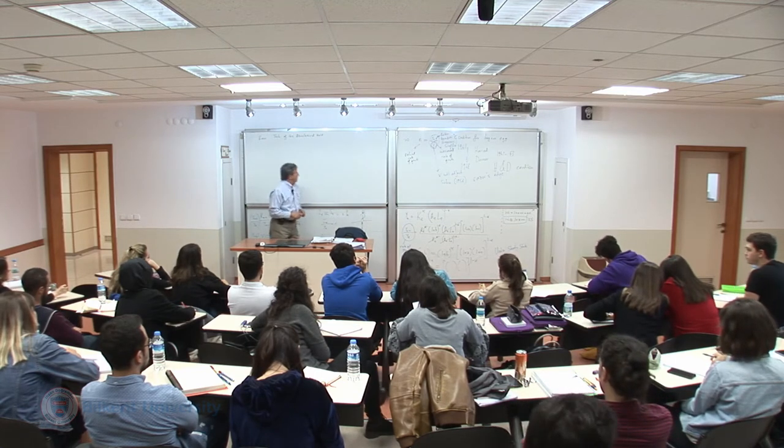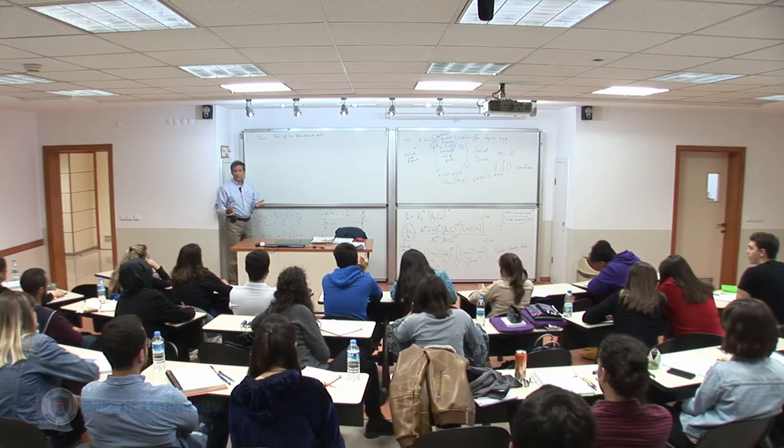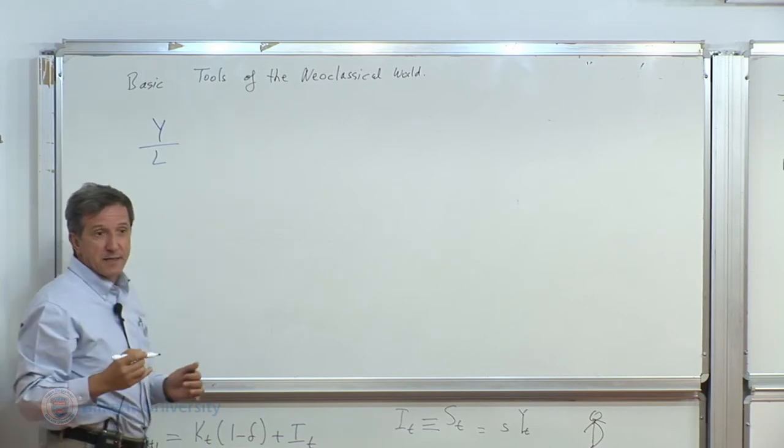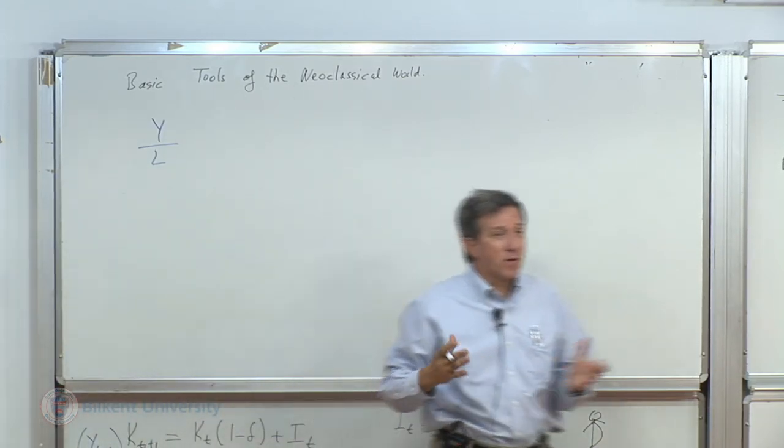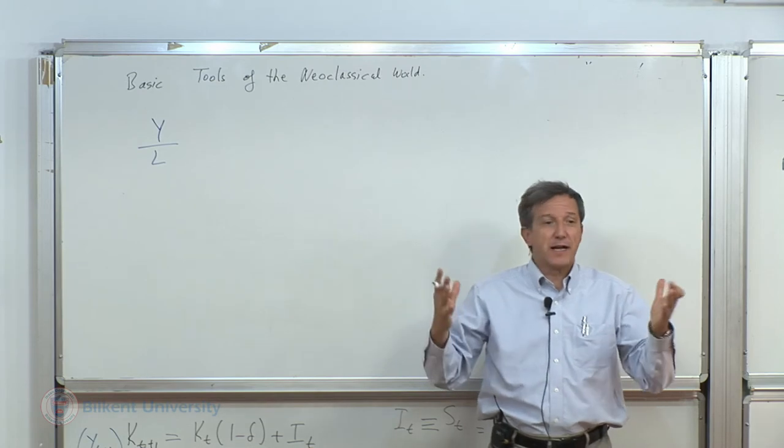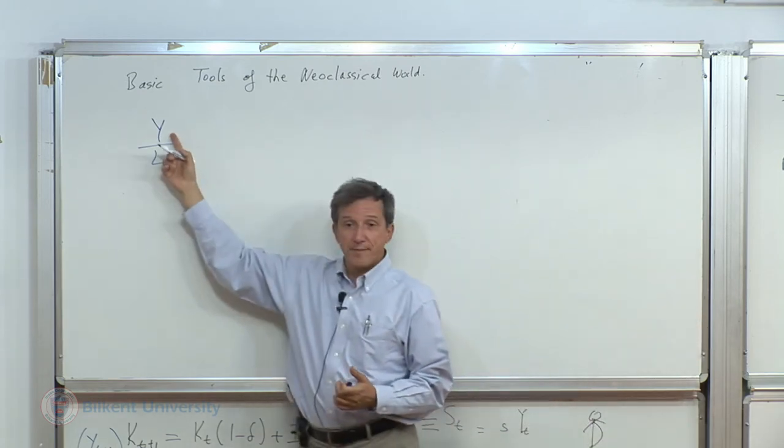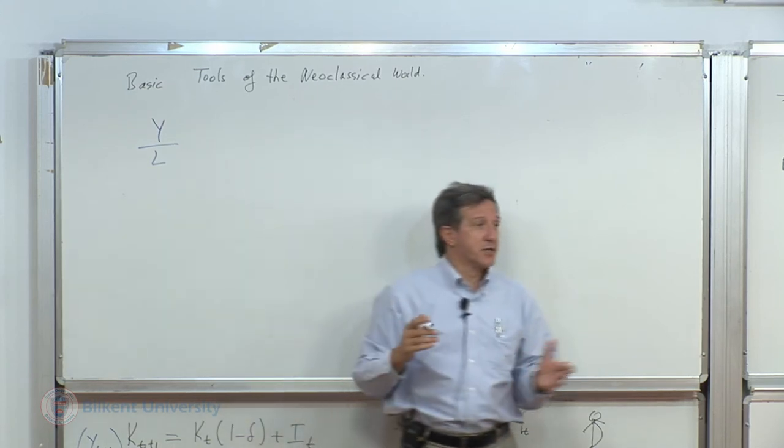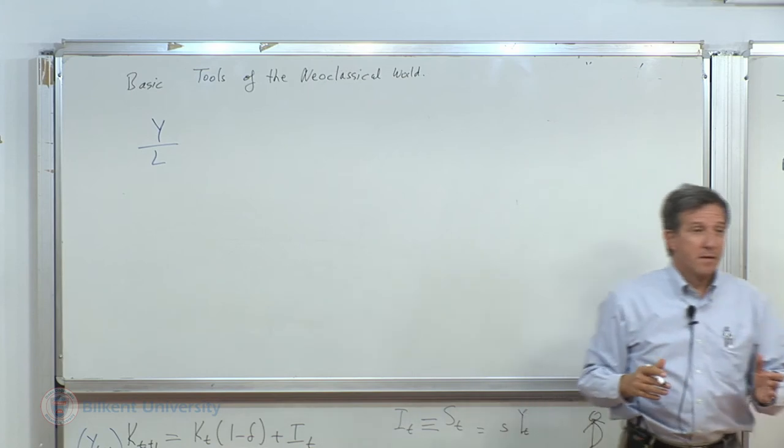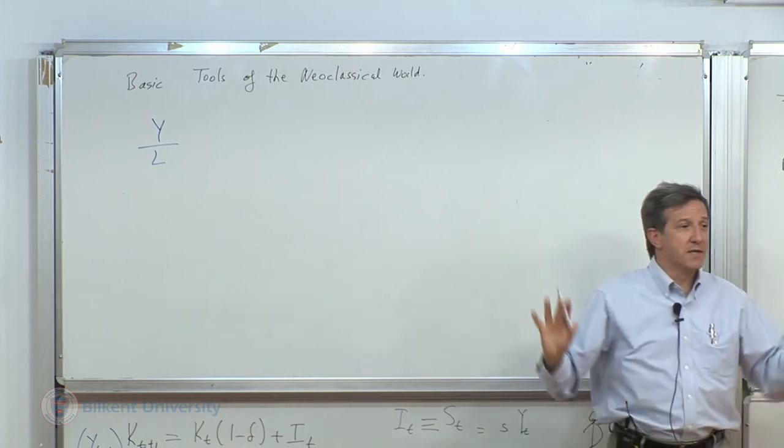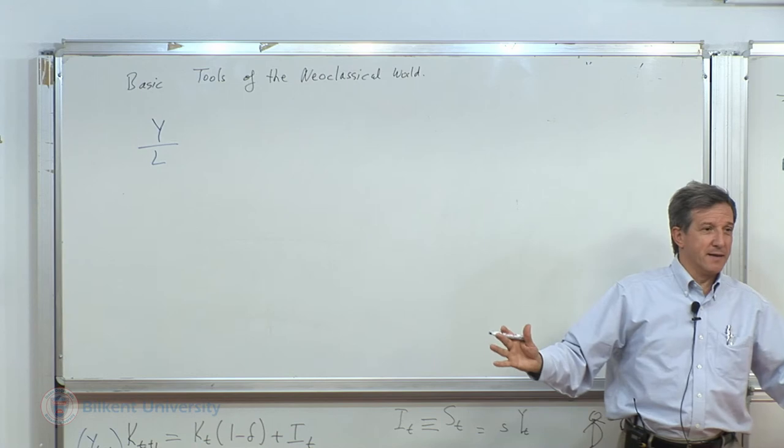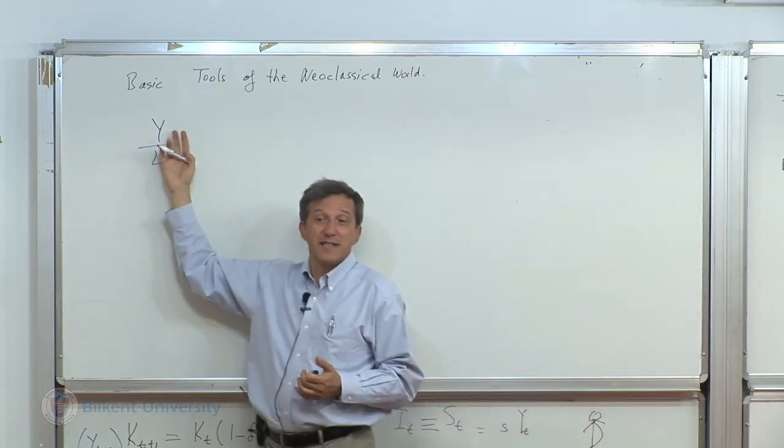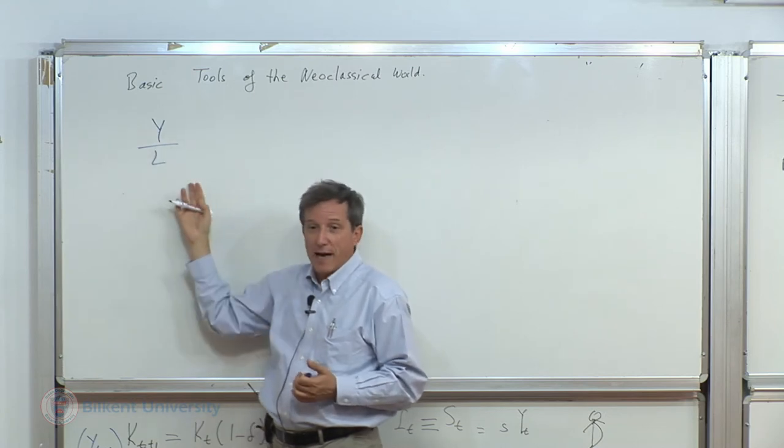Per capita income differences. What is per capita income? Y over L, right? This is the difference that we are interested in. Output or GDP per person. This is what we are interested in. Now, you must be saying at this moment, this is all we are after, explaining this phenomenon, this animal, Y over L algebraically.